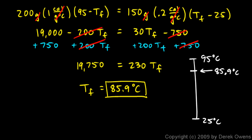Notice that it didn't end up right in the middle, halfway between 25 and 95. There are some reasons for that. One reason is there was more tea—200 grams of tea and only 150 grams of cup. Because there's more tea, its initial temperature of 95 degrees figured more strongly into the answer than the colder temperature of 25 degrees.